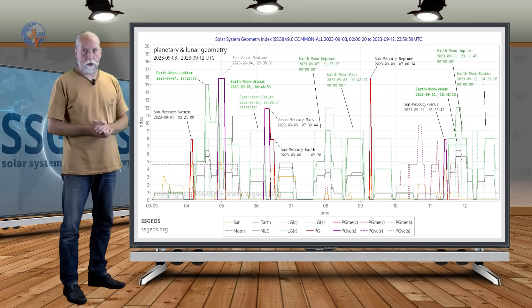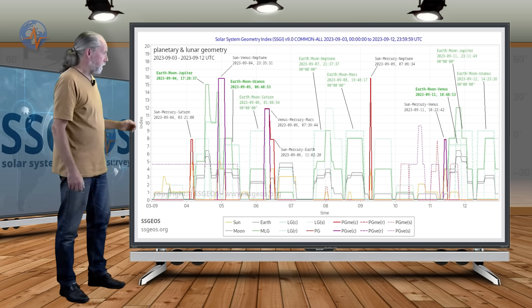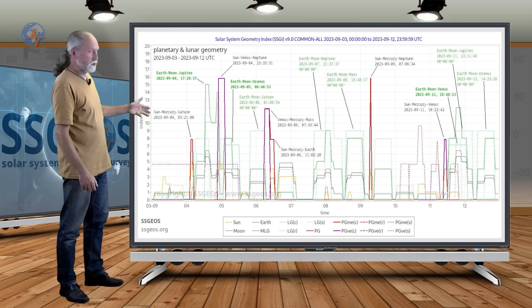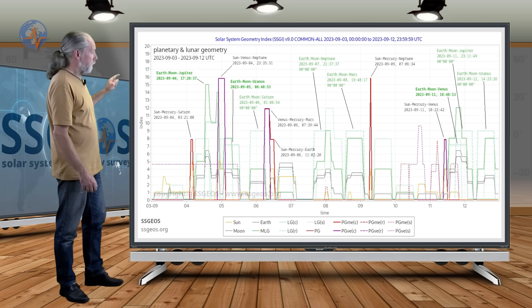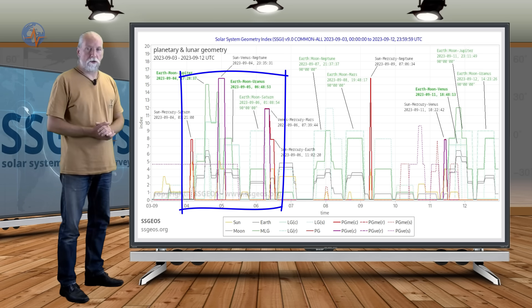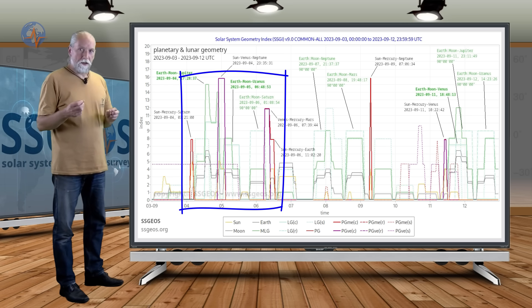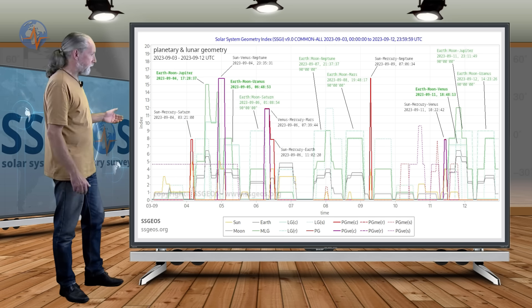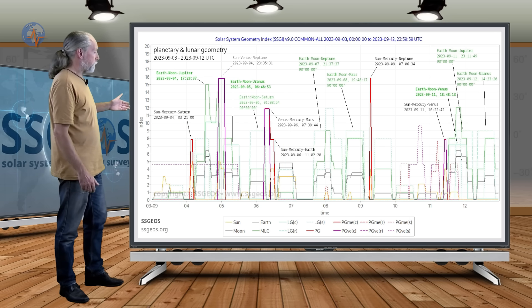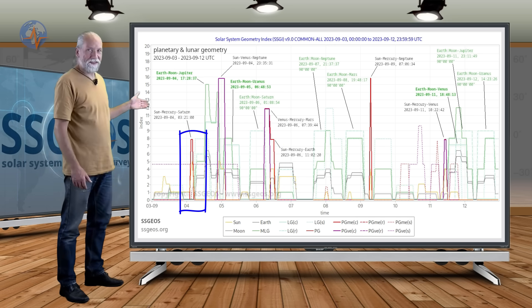Looking at the next time frame up until September 12th, we see right at the beginning, starting tomorrow, planetary conjunctions—critical planetary conjunctions indicated by the purple and red peaks—indicating the involvement of Mercury and Venus. Early tomorrow morning we have Sun-Mercury-Saturn in a conjunction.